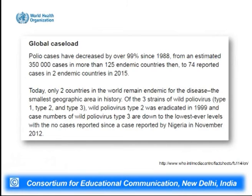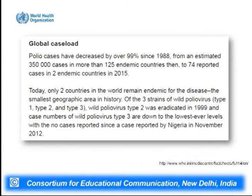Polio cases have decreased by about 99% since 1988. In 1988, about 125 endemic countries reported cases, of which only two endemic countries remain as of 2015. There are three strains of wild polio viruses: type 1, type 2, and type 3. Wild polio virus type 2 was eradicated in 1999. Cases of wild polio virus type 3 have dropped to the lowest levels, with no cases reported since a case in Nigeria in November 2012.